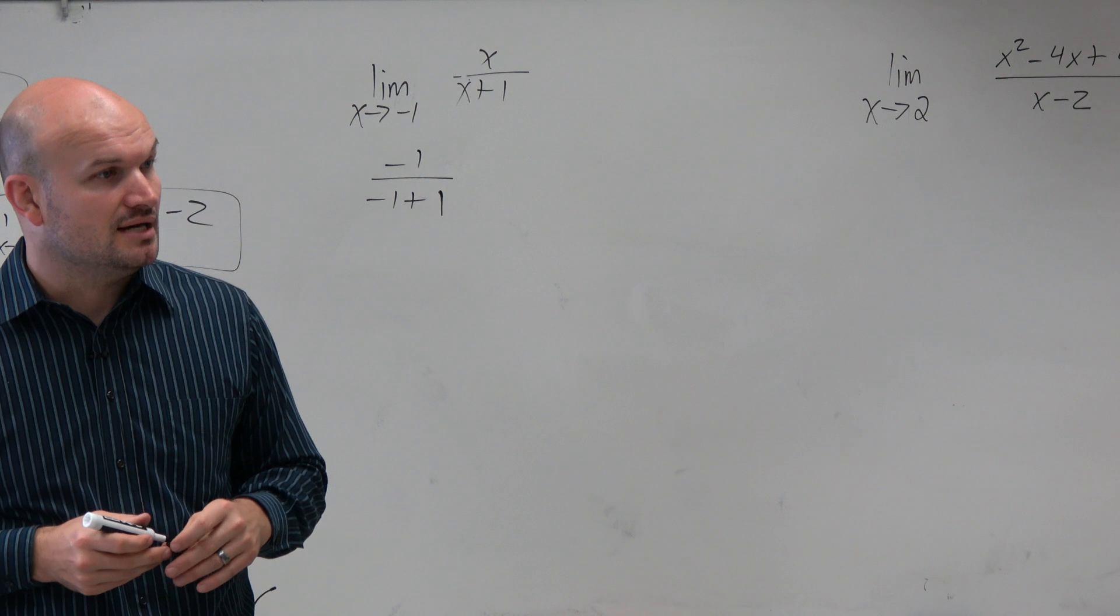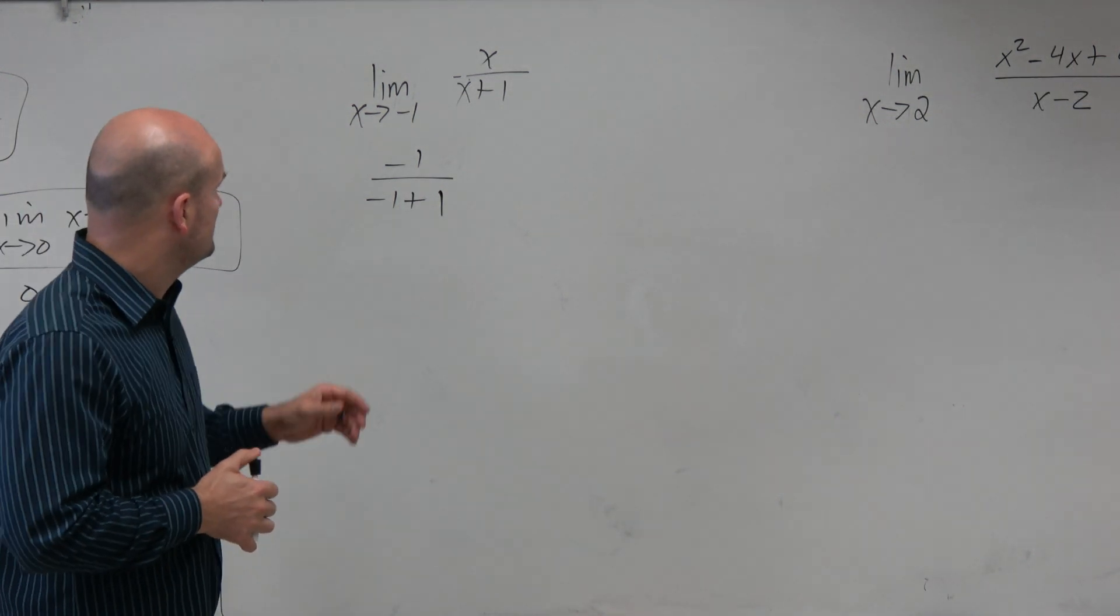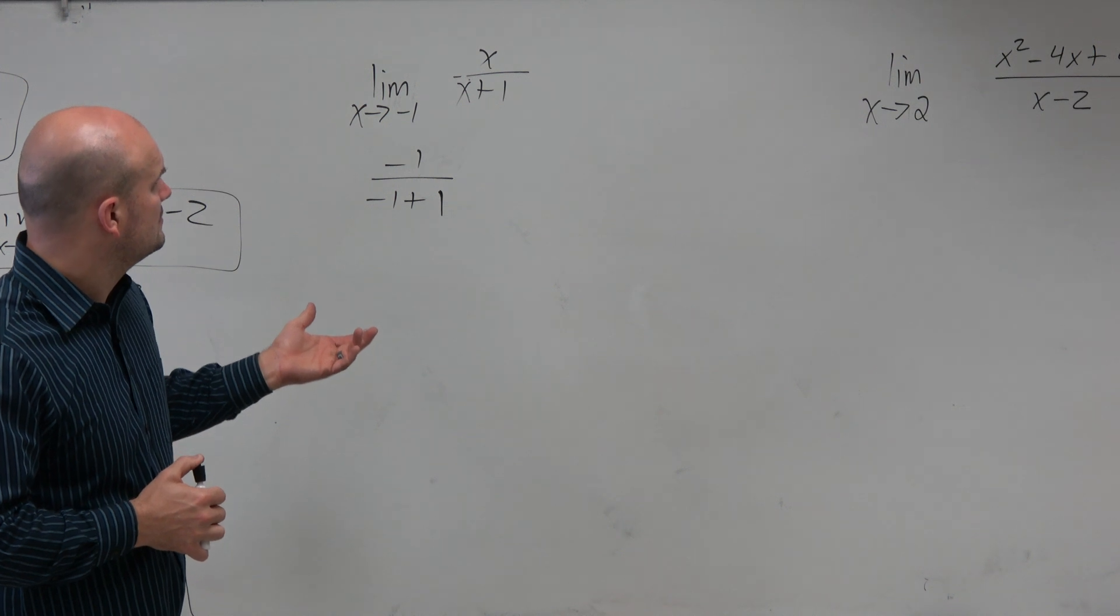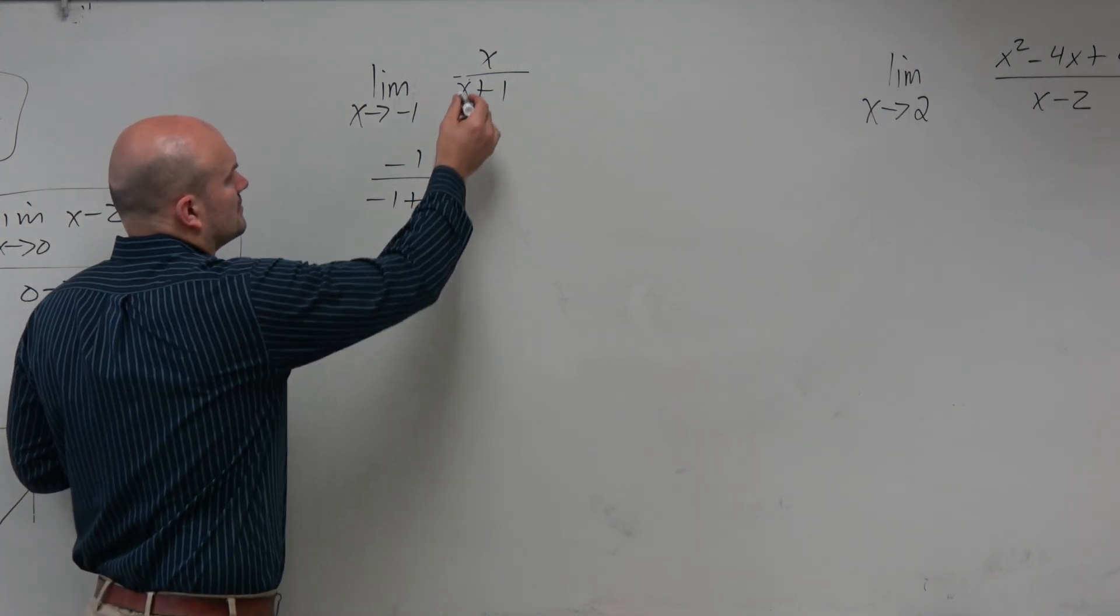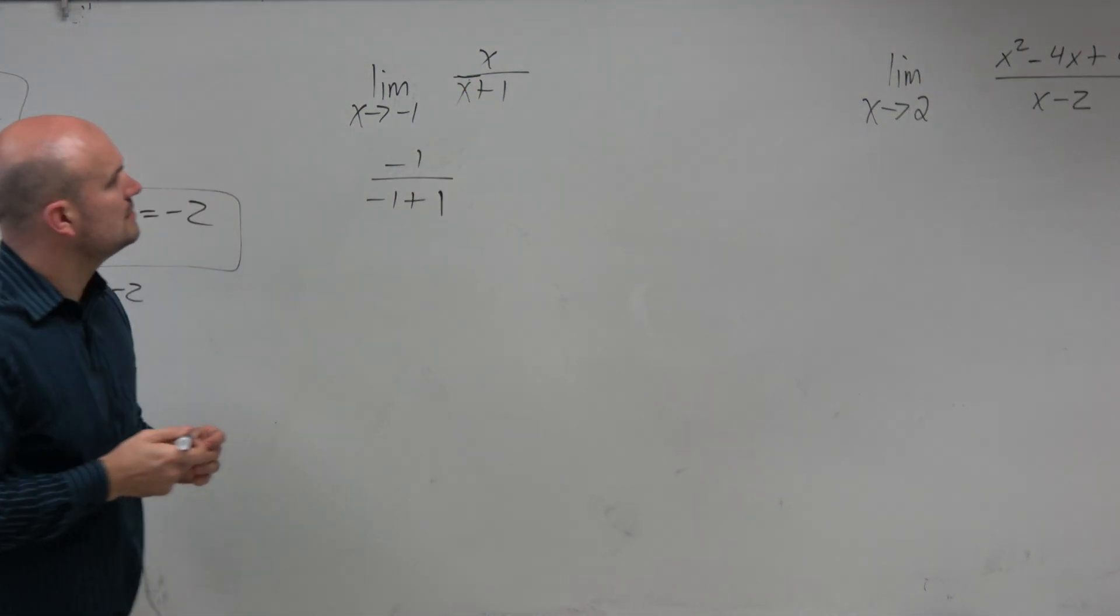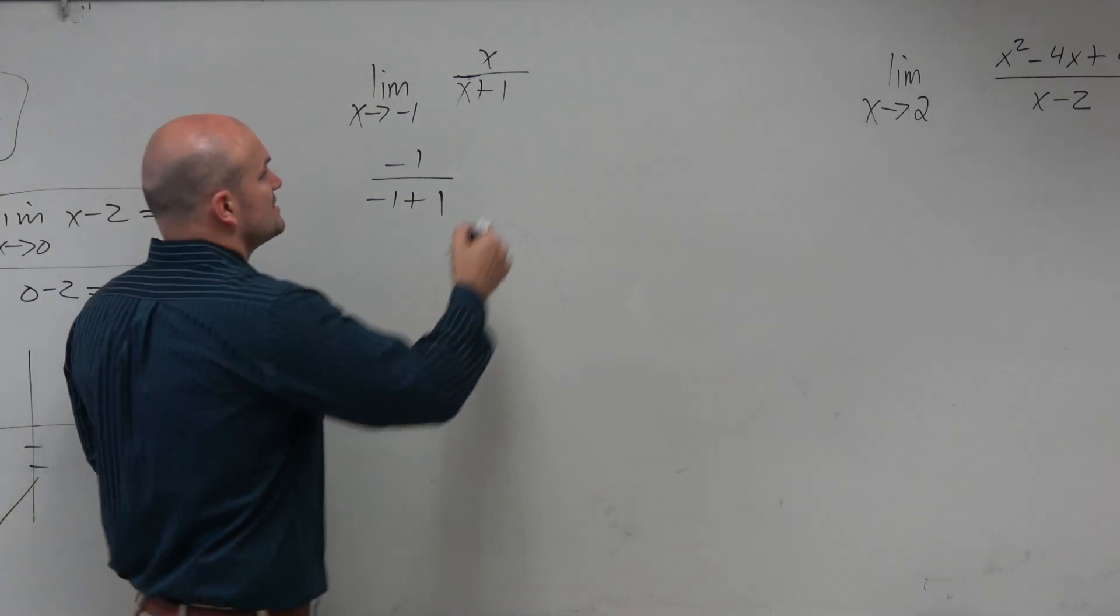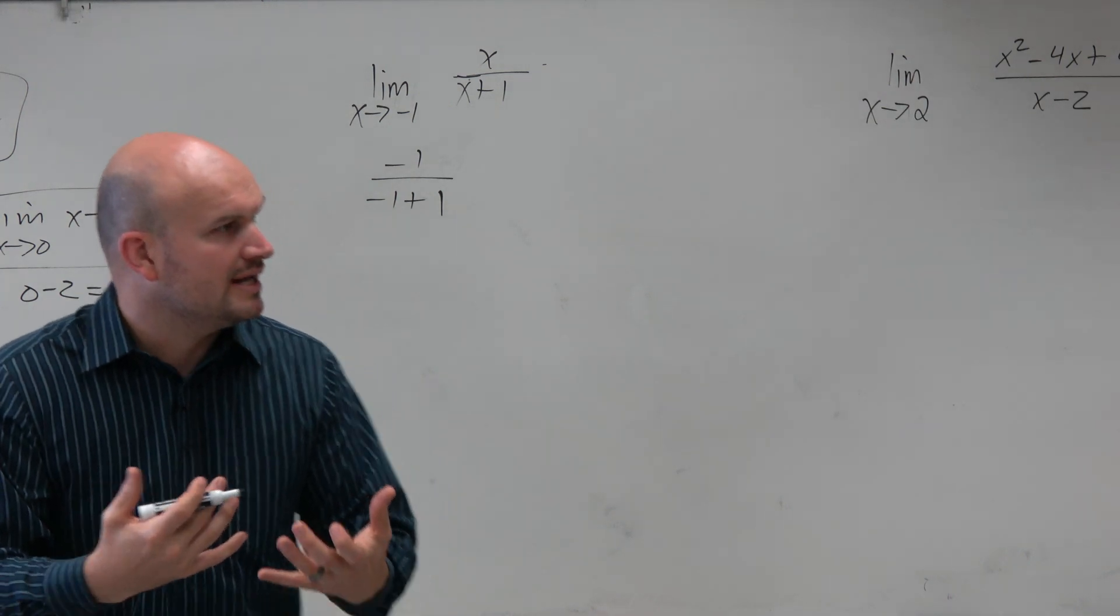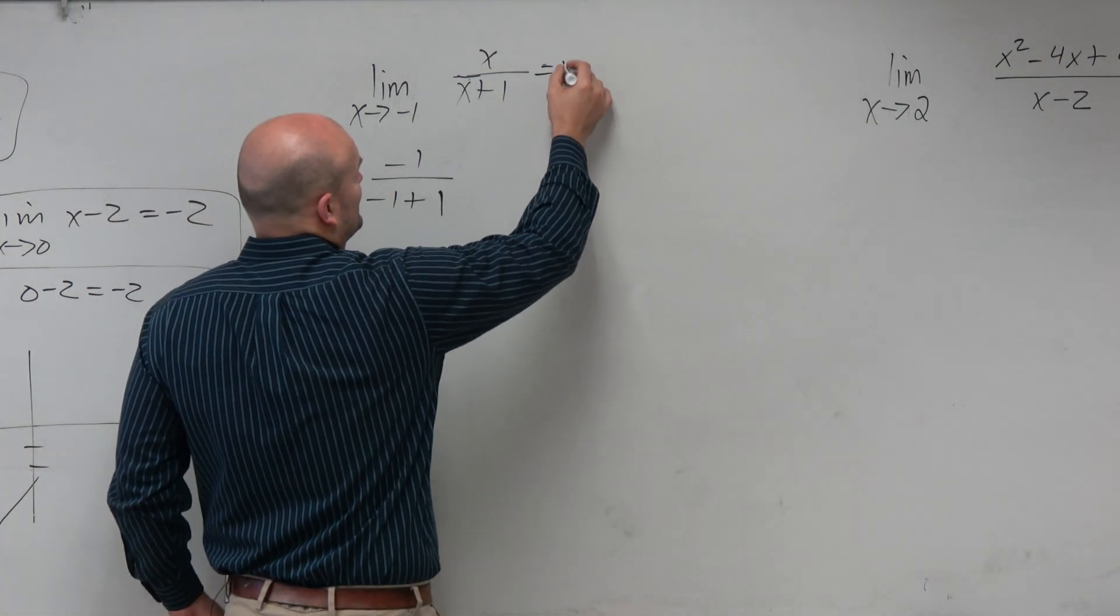So it's an asymptote. So therefore, this is undefined because we're trying to find the value at an asymptote. That's not going to give you an exact value.